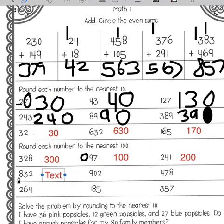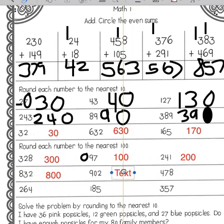Eight hundred thirty-two: eight in the hundreds place, three in the tens place. The eight is going to stay the same, it will round to 800. Nine hundred two: nine in the hundreds place, zero in the tens place, it's going to round down to 900.